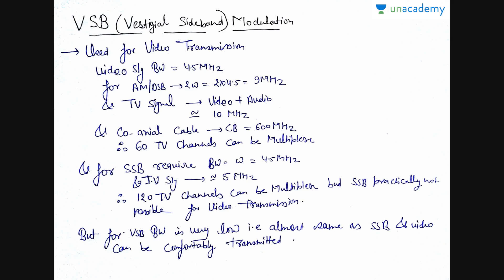Video transmission signal has a bandwidth of 4.5 MHz and for AM or DSBSC bandwidth is 2 times the message bandwidth, that is 2 times 4.5 that is 9 MHz. And TV signal contains both video as well as audio signal. So, I am approximating it to 10 MHz. And coaxial cable has a channel bandwidth of 600 MHz. So, the number of channels that can be multiplexed is 60.